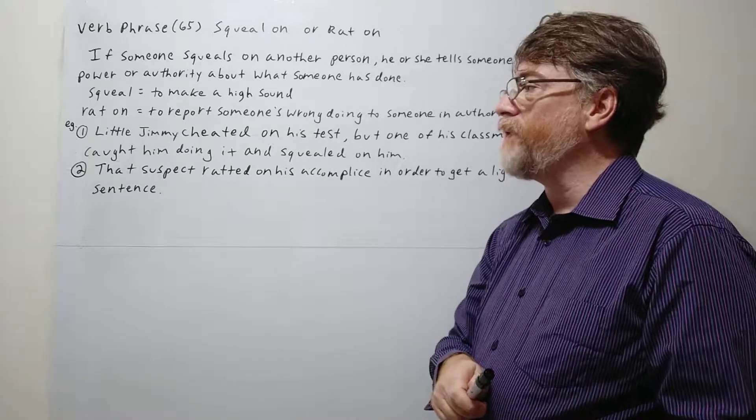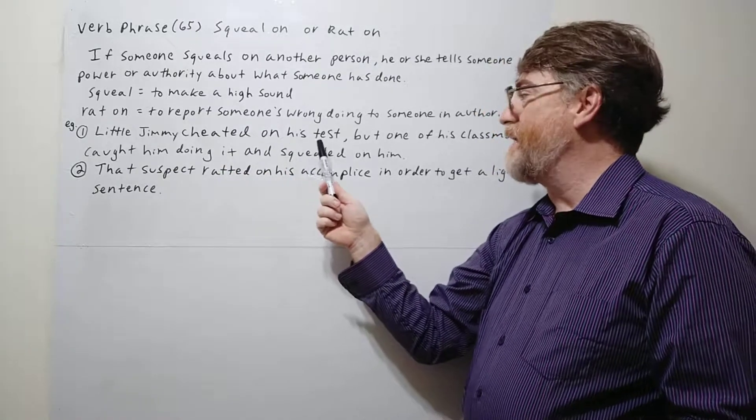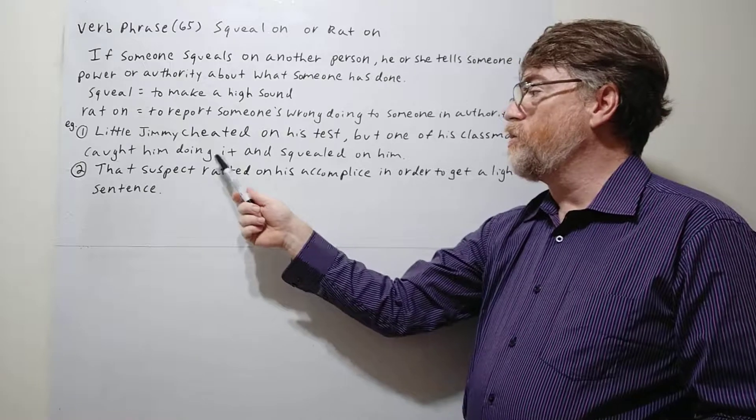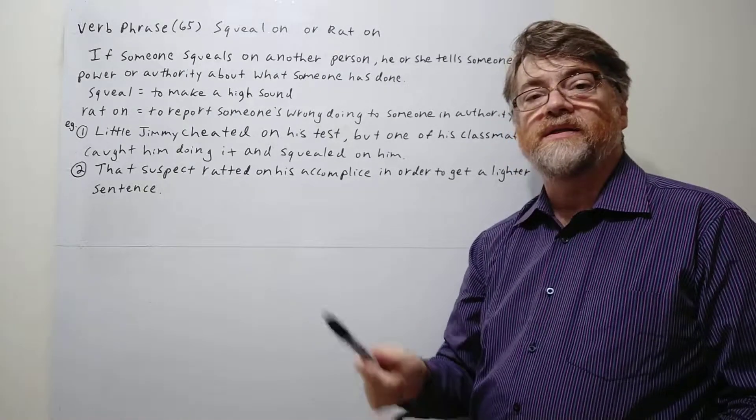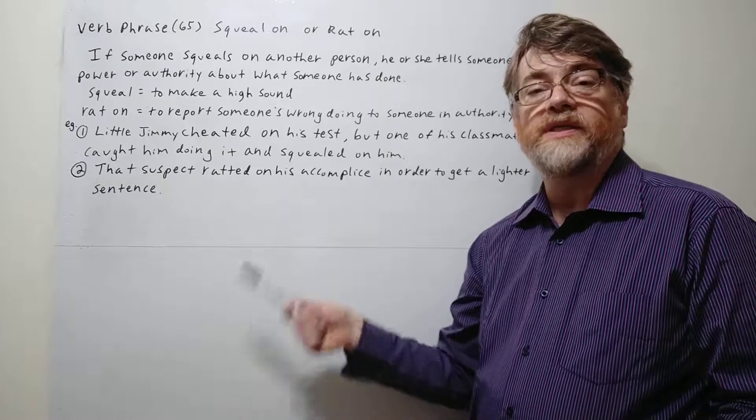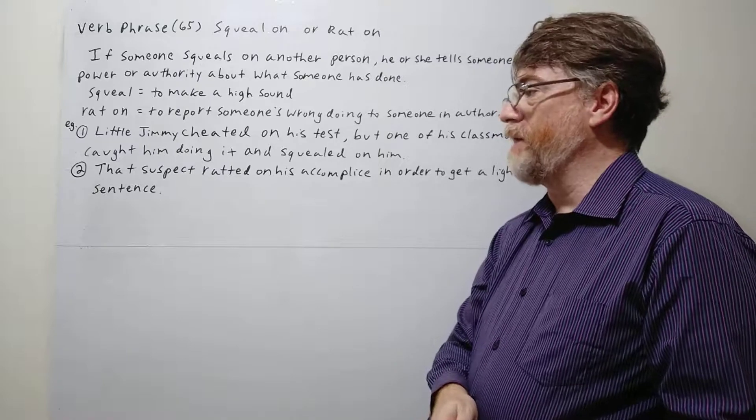Let's look at the first example. Little Jimmy cheated on his test, but one of his classmates caught him doing it and squealed on him. So one of his classmates told on him, probably told the teacher that he was cheating. So he squealed on him.